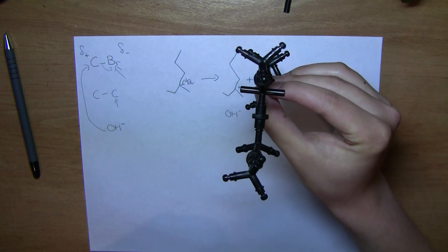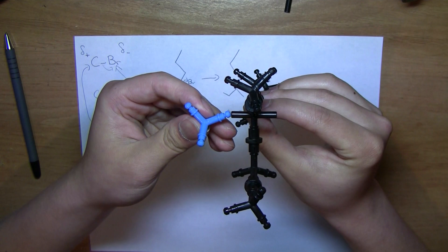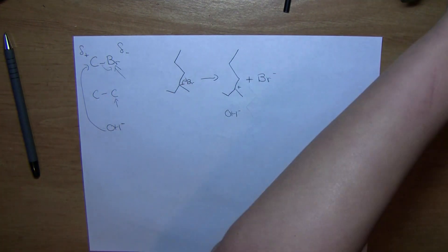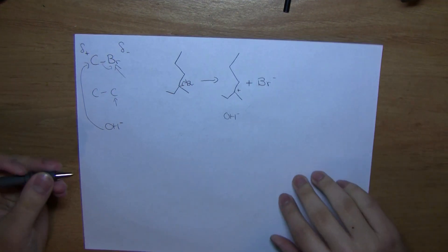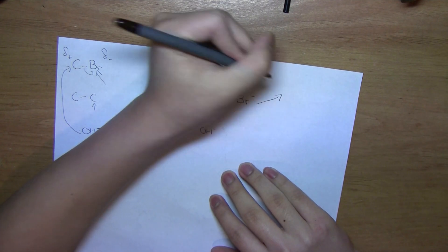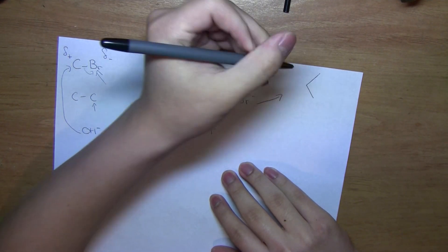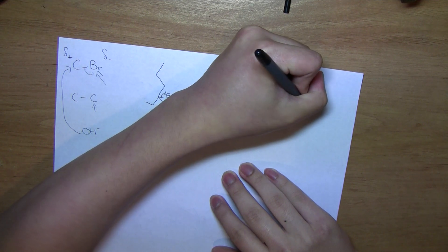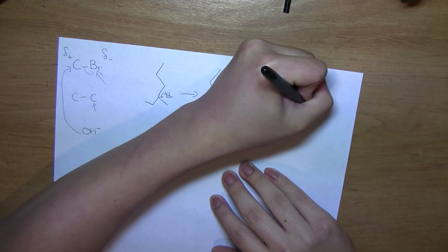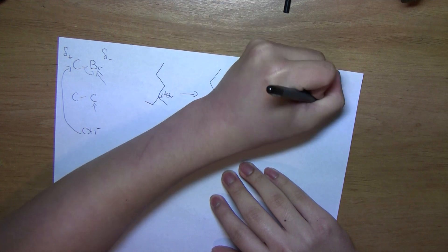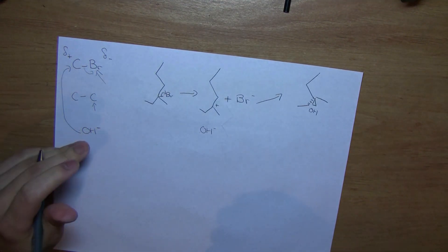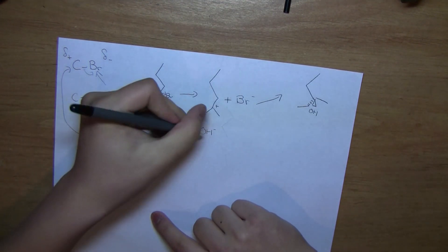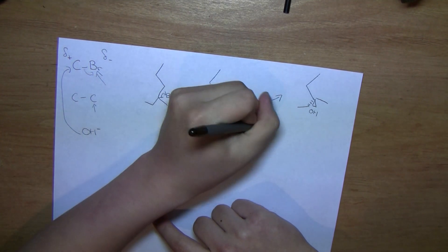So, what are those products? Let's first have it attack from this side. So, what do we get as a product? So, if we have it attack from the front side, we get this. Now, what do we have if we had the hydroxide attack from the back side? We get this.